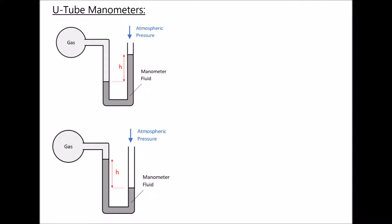The first thing that we note from our previous tutorial is that the pressure at the same height in a given fluid is going to be equal. So we know that the pressure at this surface of our liquid must equal the pressure at the same height in the other arm of the U-tube manometer.